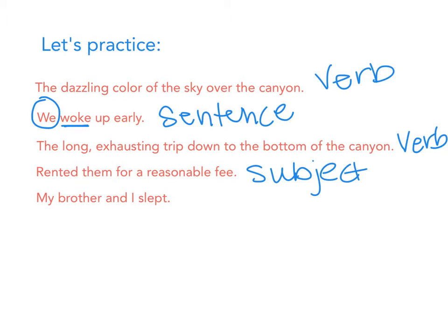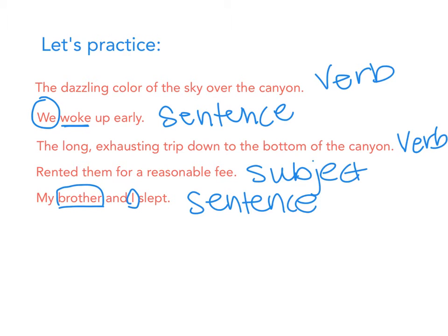'My brother and I slept.' Is this a sentence or a sentence fragment? It is a sentence. You have the subject, and there is your verb.